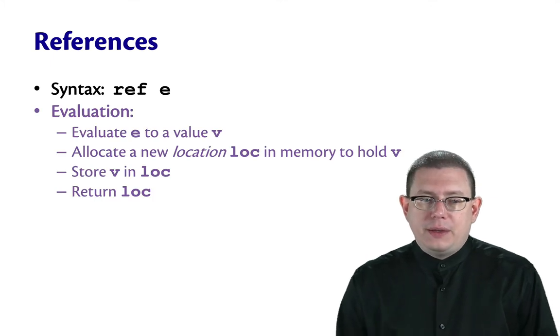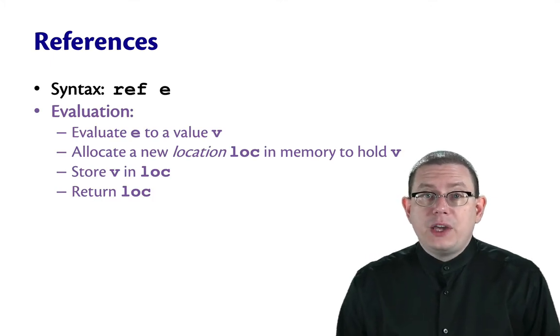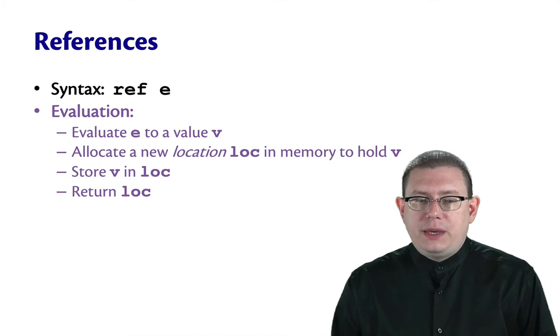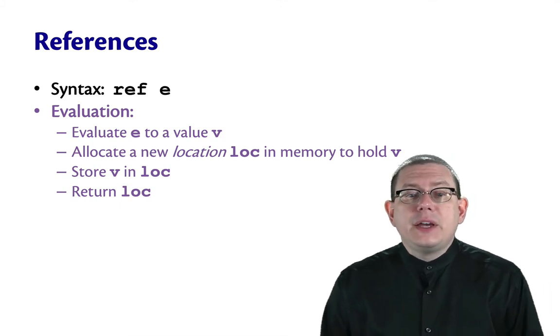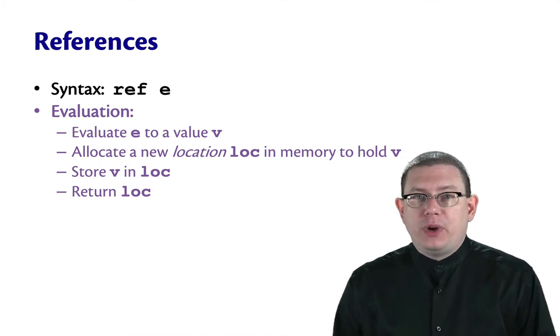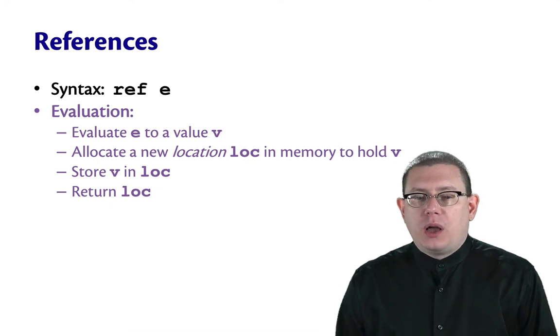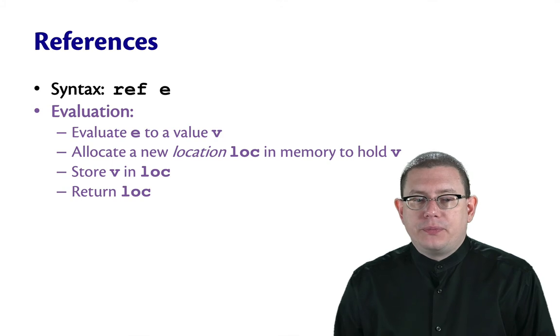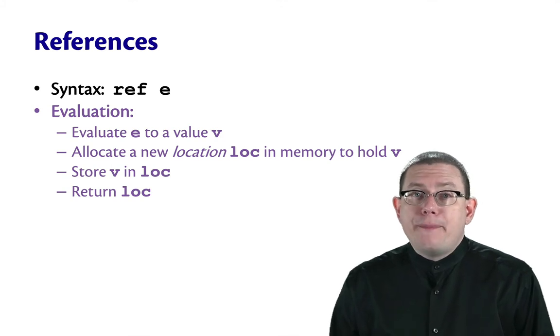To evaluate ref e, OCaml first evaluates e to a value v. Then it allocates a new location in memory. Let's call that location loc. That is where v will be stored. OCaml returns that memory location as the result of the function call to ref.